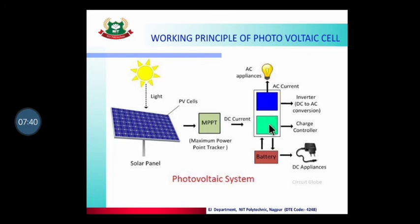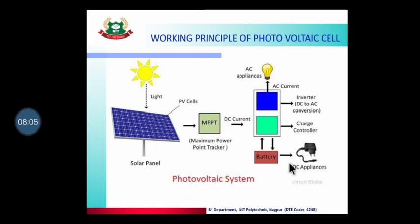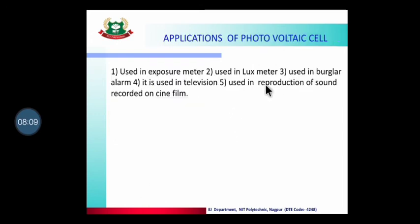The energy is stored in a battery as DC energy. Then we convert DC to AC and supply to the load. We can also supply a DC charger. This is the overall system of the photovoltaic cell.